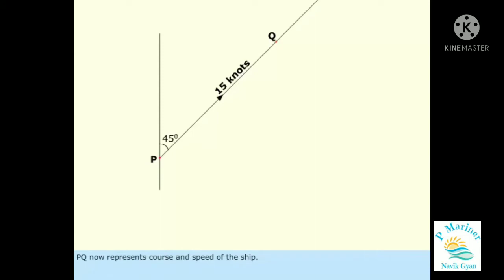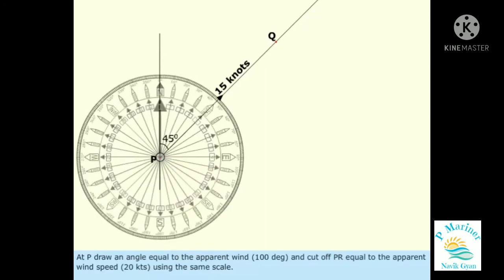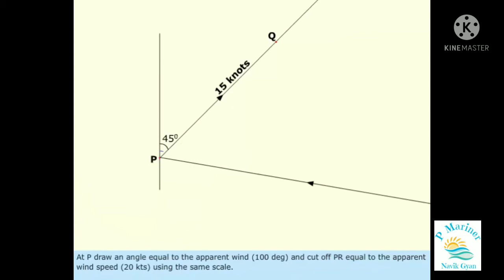PQ now represents course and speed of the ship. At P, draw an angle equal to the apparent wind, 100 degrees, and cut off PR equal to the apparent wind speed, 20 knots, using the same scale.